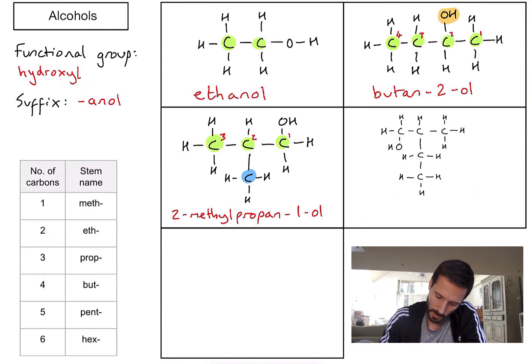Example number four. Slightly tricky looking one again. Let's first of all identify my main carbon chain. A common mistake here would be to go one, two, three carbons. Actually, if I go back and count again, I want to find the longest line of carbons. It doesn't have to be in a straight line. So I could go one, two, three, four. It's going to give me the stem name of but. So let's put but.